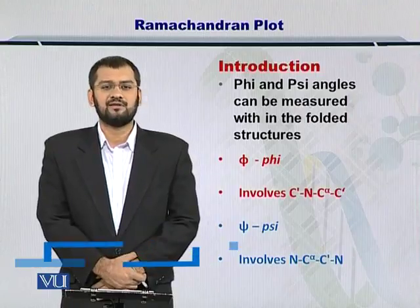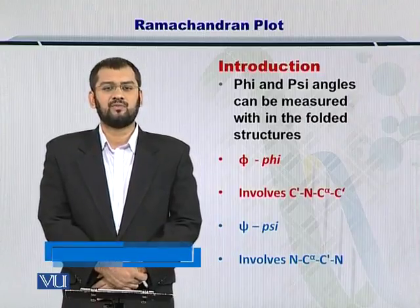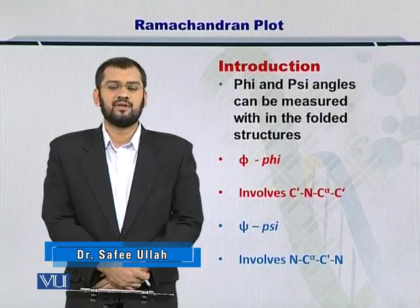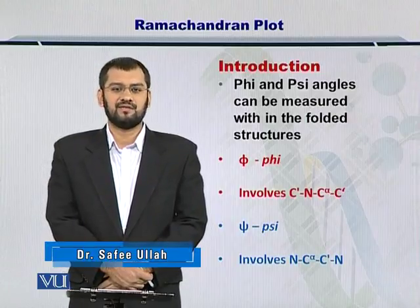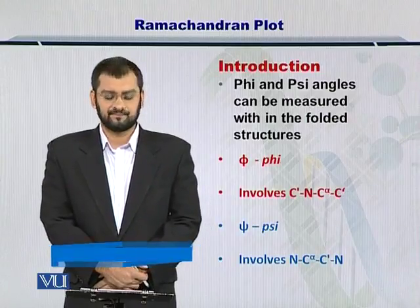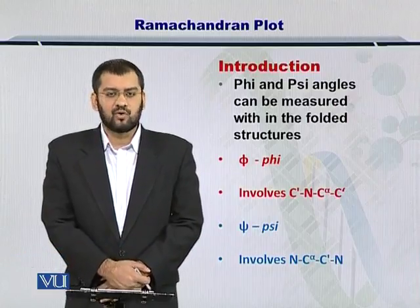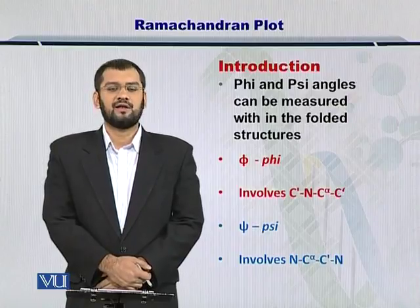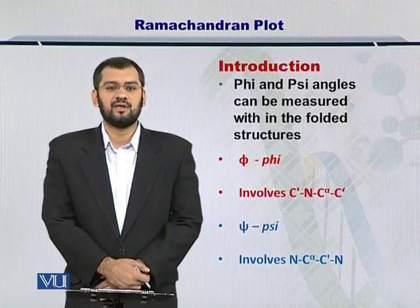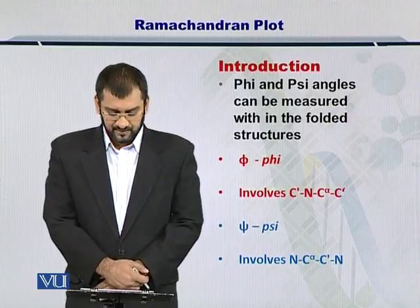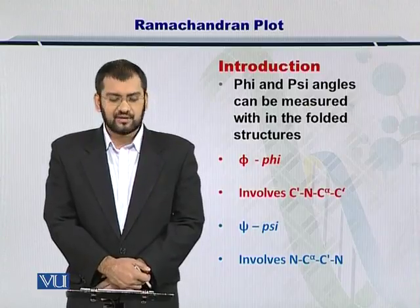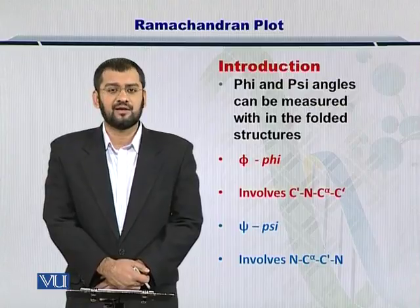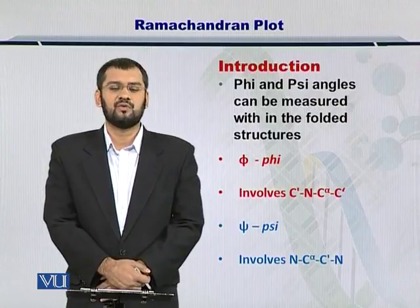Phi and Psi are the angles that form between the alpha carbon and the peptide bond planes surrounding the alpha carbon. Phi involves the angle between beta carbons, where the nitrogen and alpha carbon are considered to be the singular atom. Psi, on the other hand, is the angle between two nitrogen atoms, while the alpha and beta carbon are considered to be overlapped.